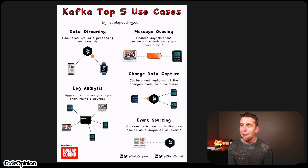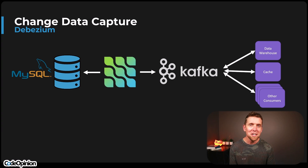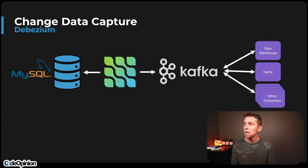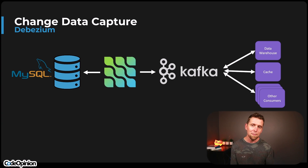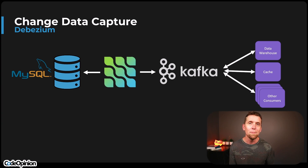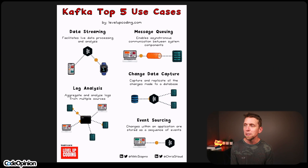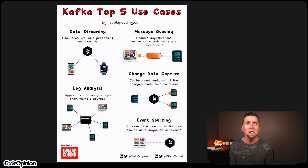Number two is change data capture. The infographic says: capture and replicate all the changes made to a database. Kafka doesn't actually do CDC or change data capture — that's why I'm including it in this list. Tools like Debezium do. Debezium interacts with MySQL's bin log, captures all those changes, and then publishes them to topics in Kafka, which then various consumers — like a data warehouse, cache invalidation, or other services — can subscribe to. Debezium is the CDC tool; Kafka is just the means to distribute that data.